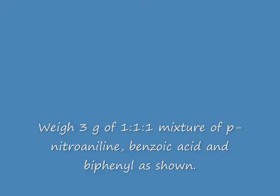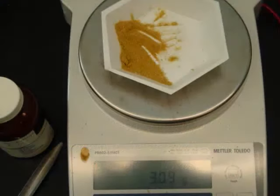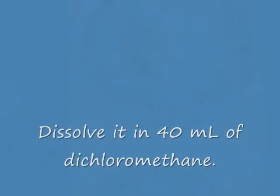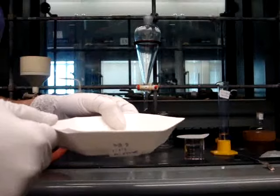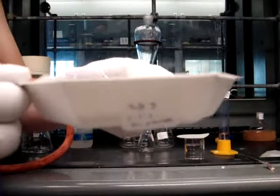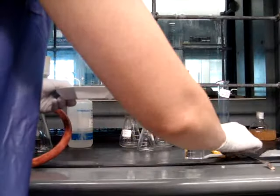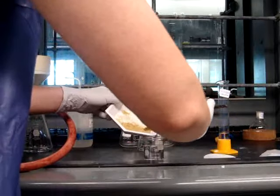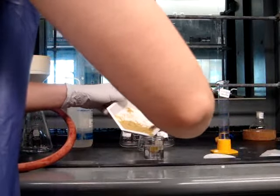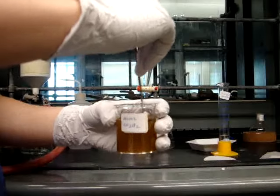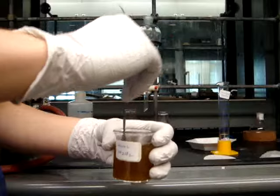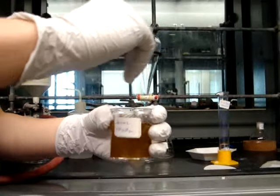Now you've weighed out your 3 grams of your P-nitro-aniline, benzoic acid, and biphenyl mixture. You're going to dissolve this in 40 milliliters of your organic solvent, dichloromethane. Make sure that this compound dissolves completely before you add it into the separatory funnel. If it is not dissolving completely, add more organic solvent.